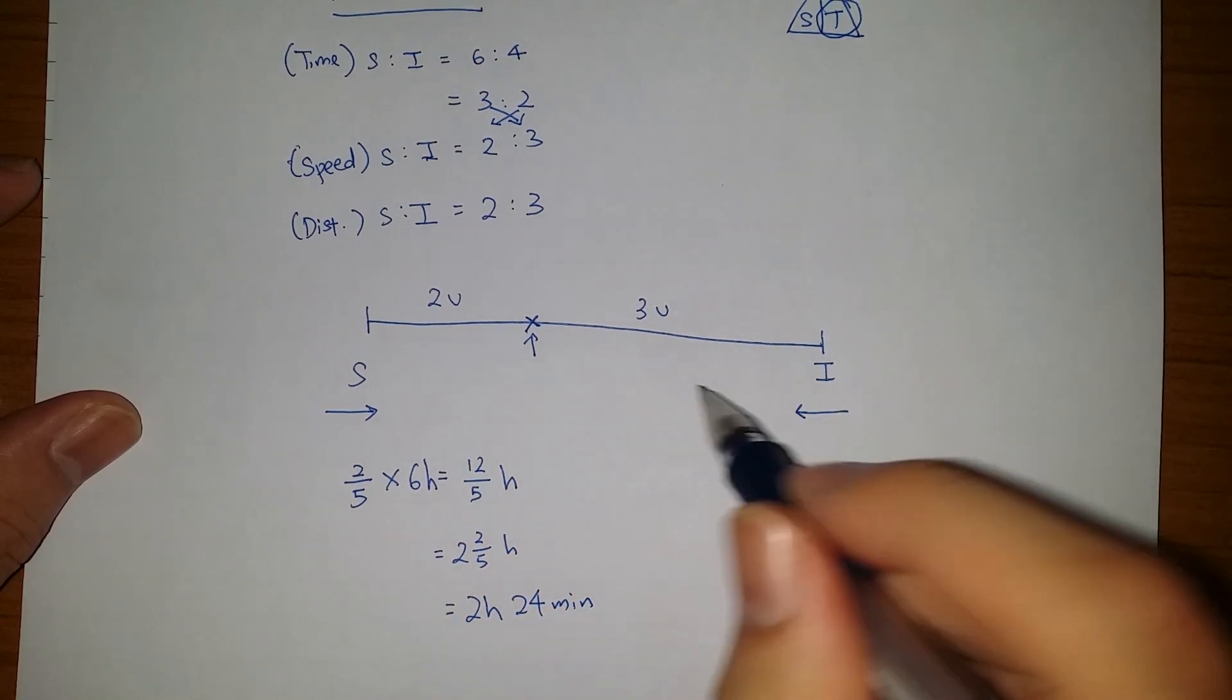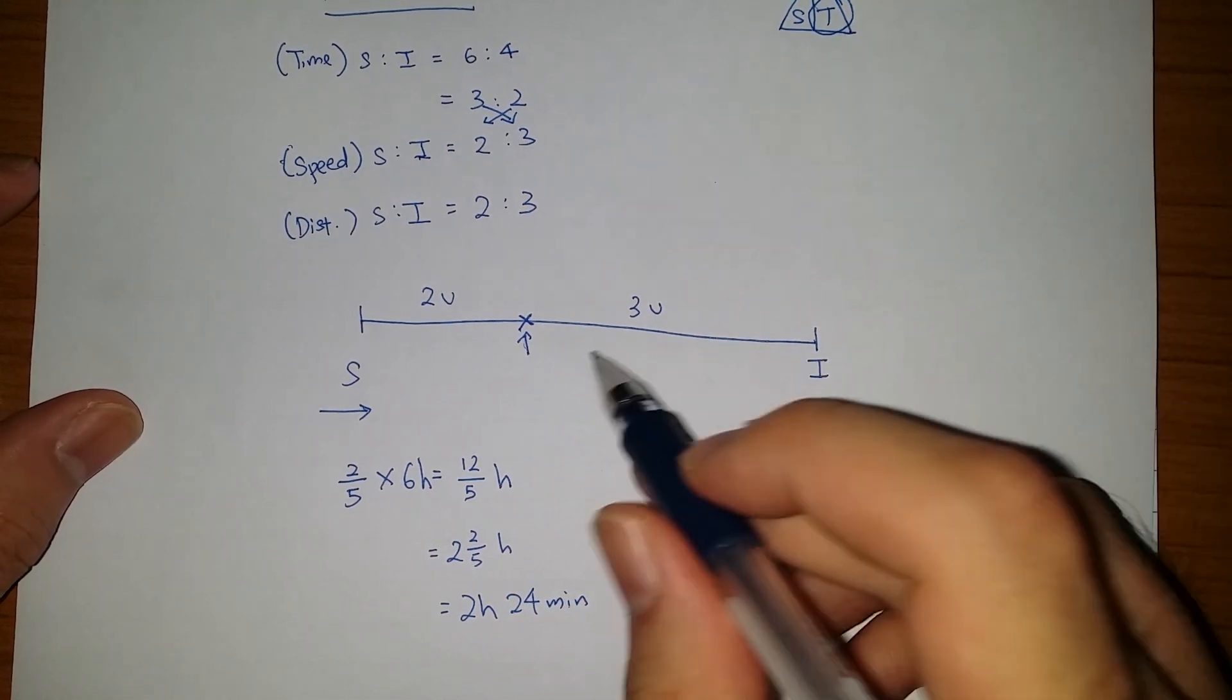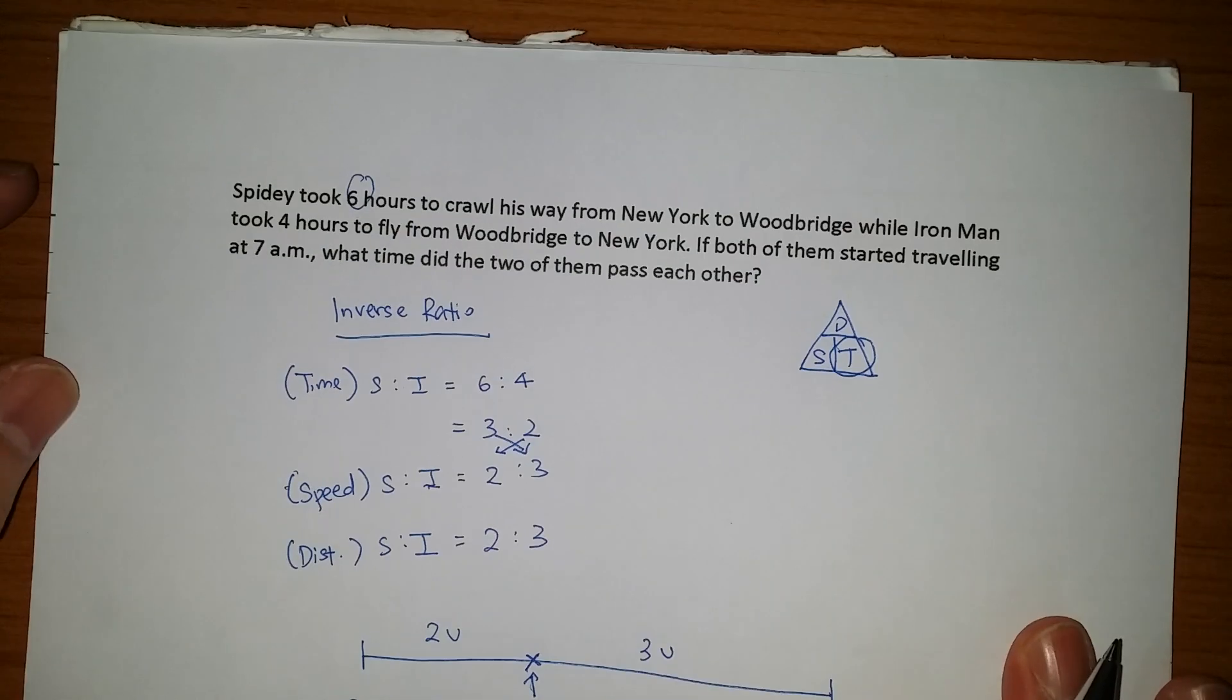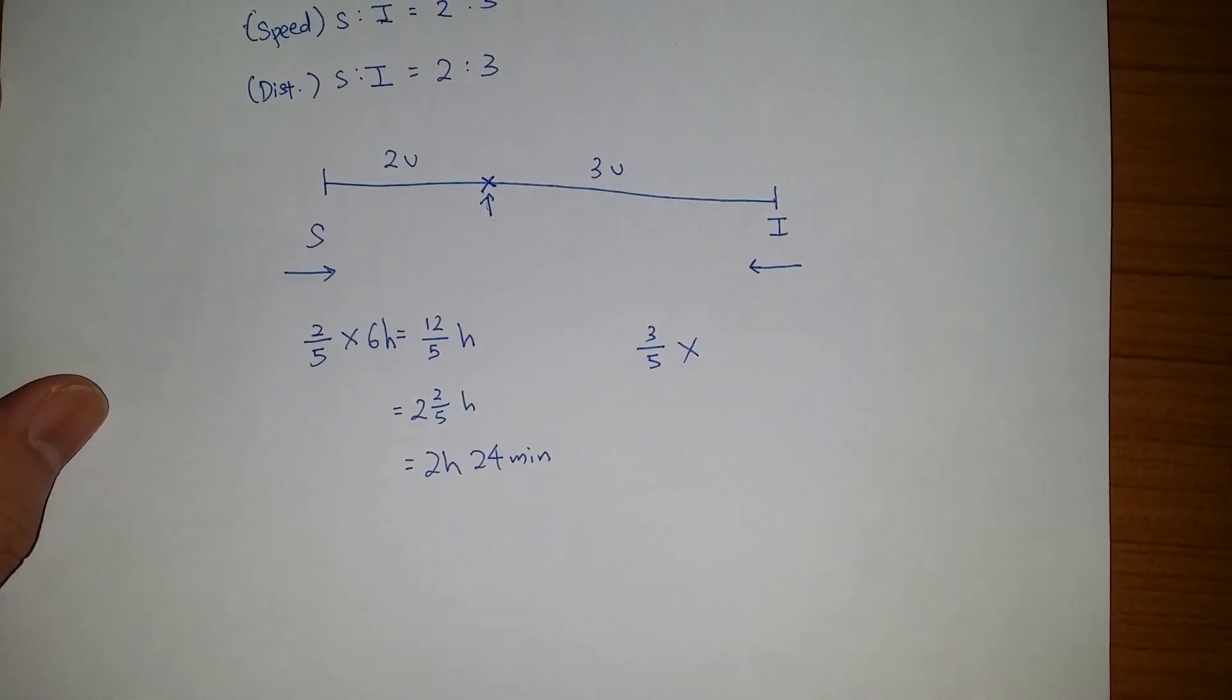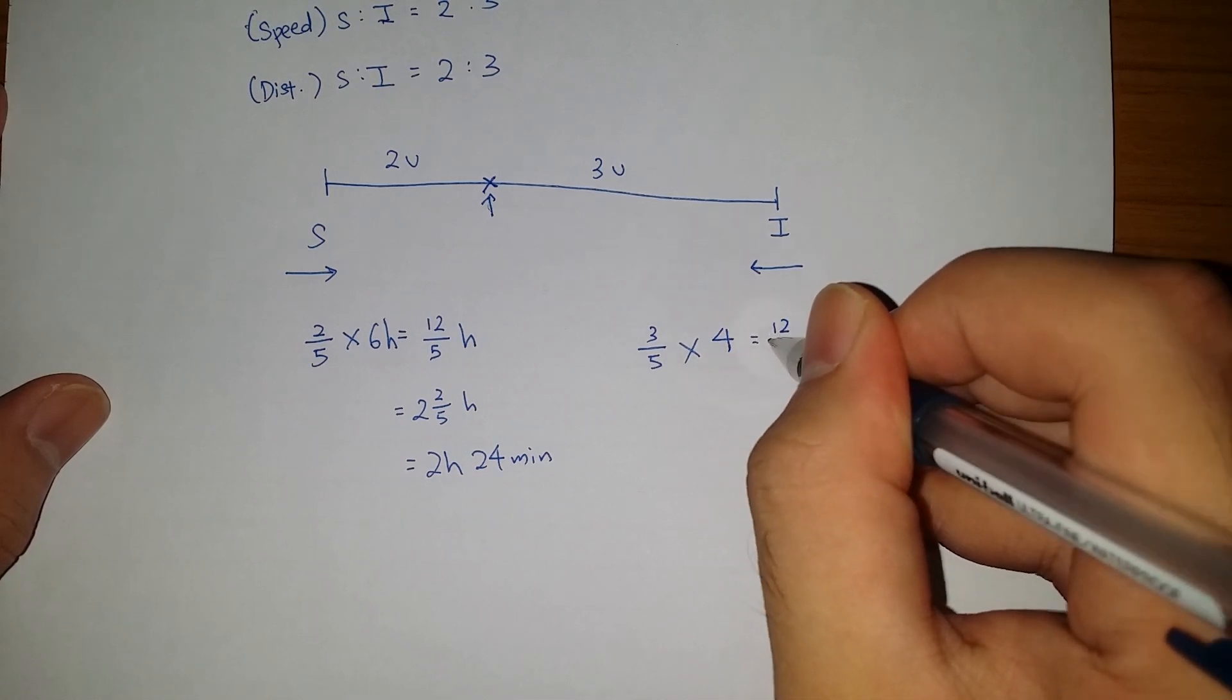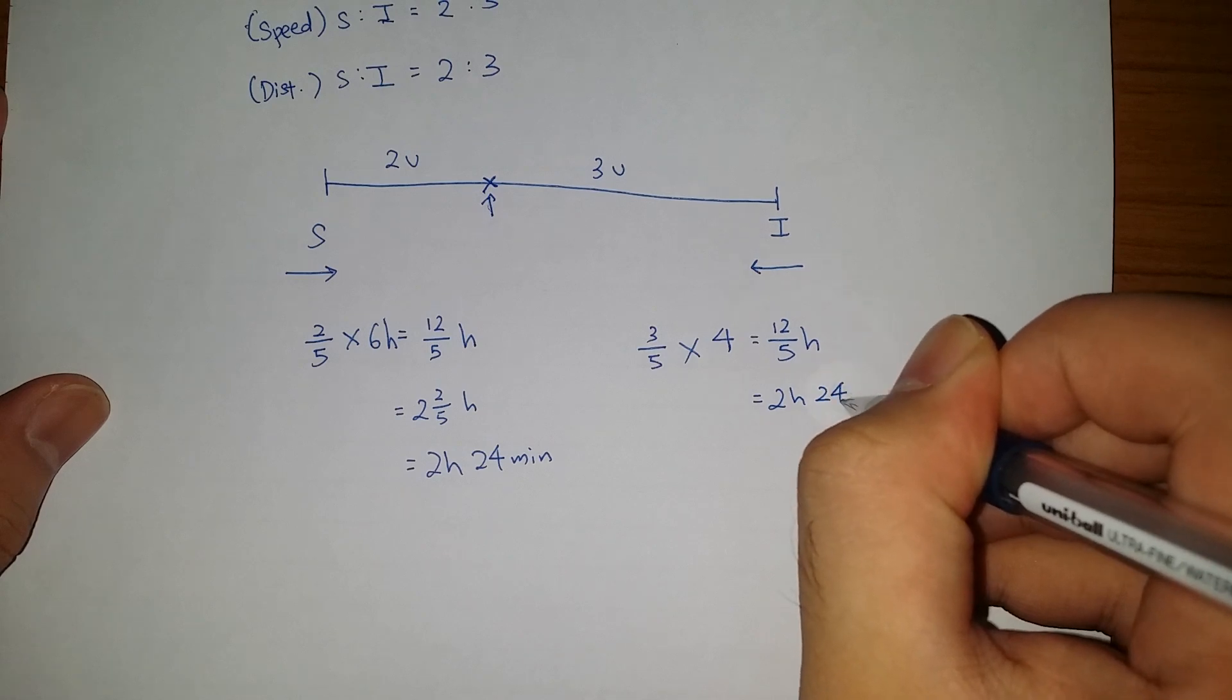Now the question is that Iron Man should take the same amount of time to reach this point as well. But Iron Man takes 3/5 of his journey, and we know that Iron Man took 4 hours. Hence, 3/5 of 4 hours would also give me 12/5 hours. If we simplify it, we also get 2 hours and 24 minutes.